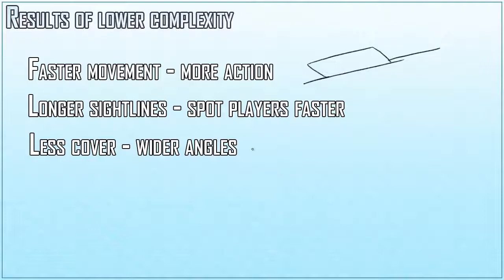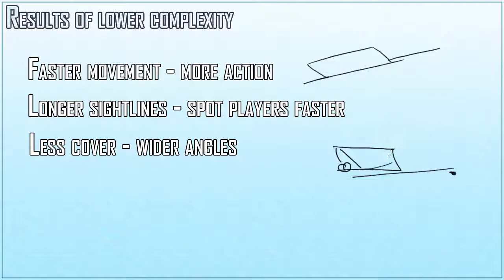There is also less cover, which means wider angles. So instead of having a real wall to hide behind and sitting here, you'd have to be flanked - the enemy has to be way over here to shoot at you because you're hiding behind the wall. But if the wall has a big hole in it, the enemies might be able to shoot you from much closer. This is basically the wider angle effect.